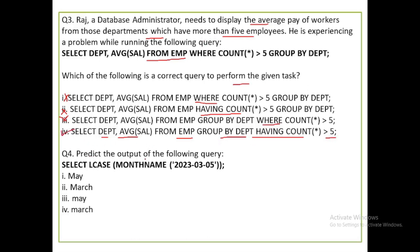Next: predict the output of the following query — SELECT LCASE(MONTHNAME(...)). The MONTHNAME function finds out the month name. Month 3 is March. The LCASE function converts it to lowercase. So the output is 'march'. The fourth option is correct.